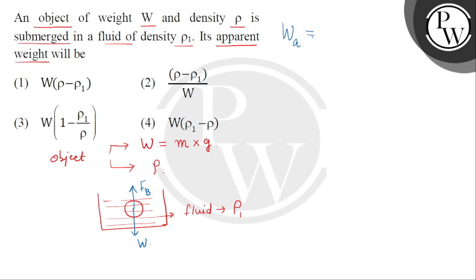So W_A will be equals to the weight of the object minus the buoyant force. अब weight of the object क्या होगा हमारे पास में? That will be the mass of the object multiplied by G.